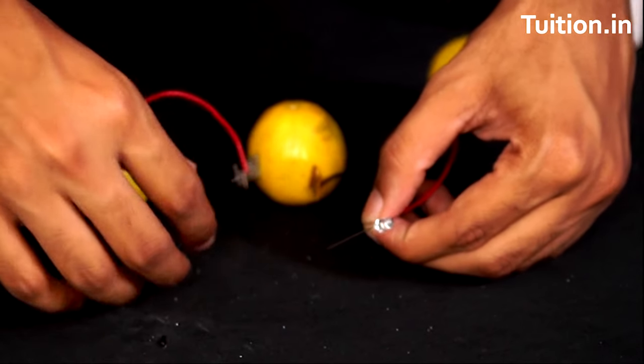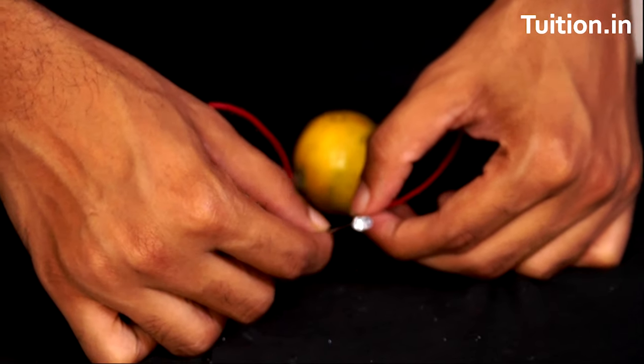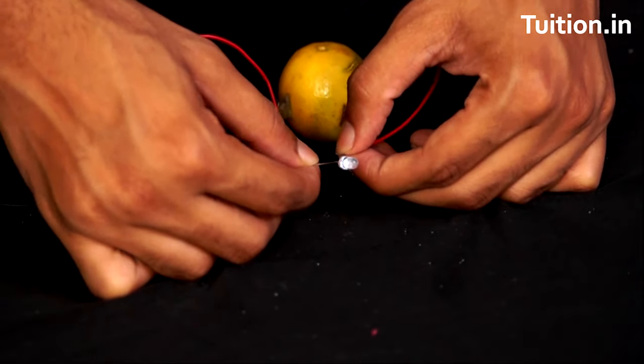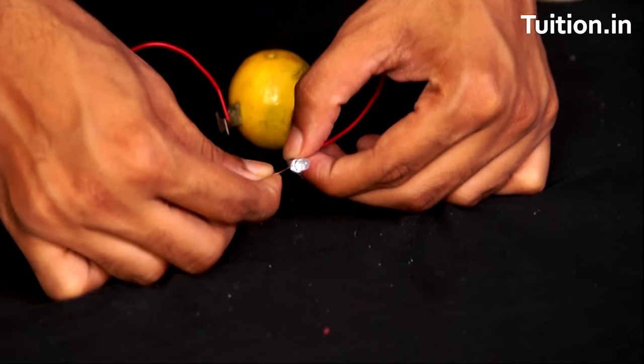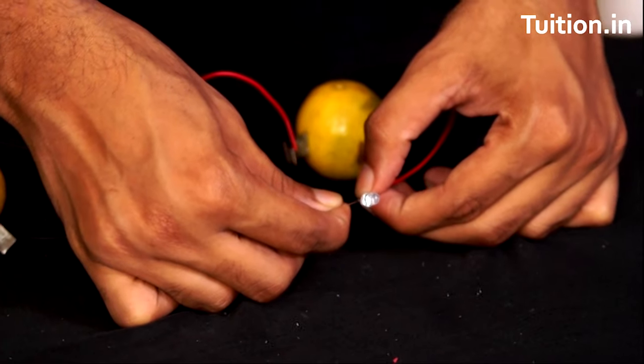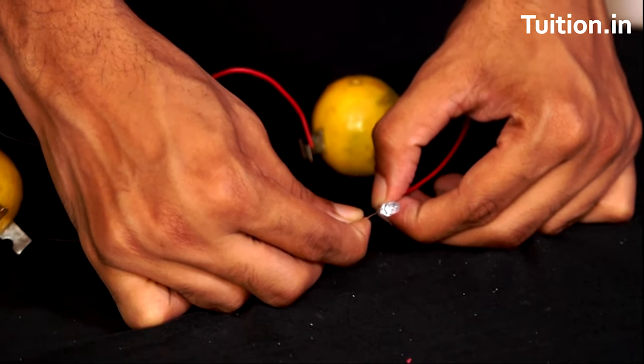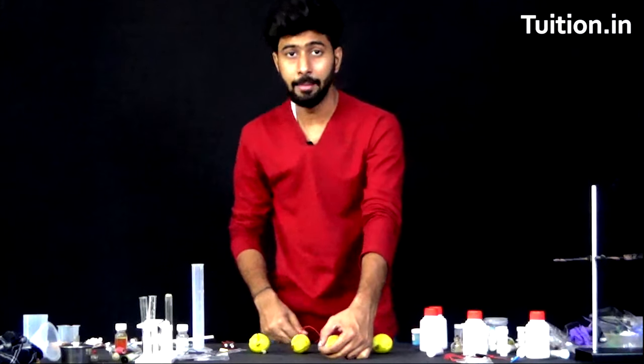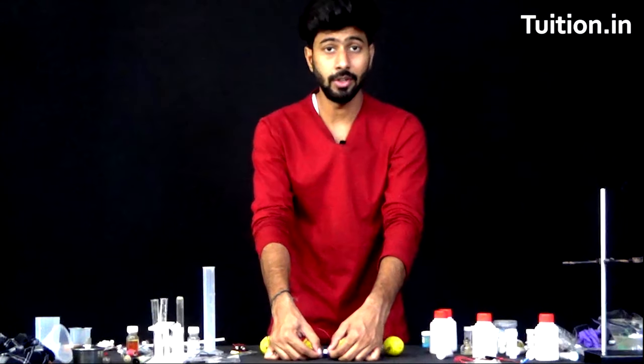So here goes our cathode, and here is our anode. Ideally, I should have used the black wire there and red here. That's fine. Color of the wire does not matter for the end result here. The LED indeed is glowing. And as you can see, the reason why it's glowing is because these lemons together are creating a potential difference across the ends of the LED.